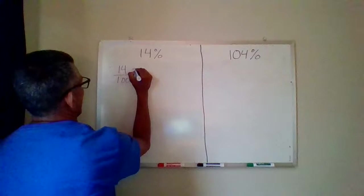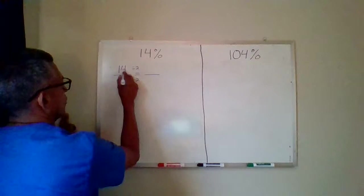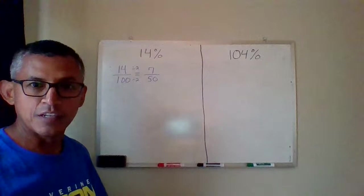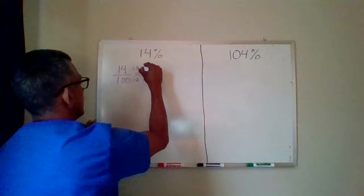I know that both of these can be divided evenly by 2, so I'm going to start there. 14 divided by 2 is 7. 100 divided by 2 is 50. There are no values that will divide evenly into 7 and 50, so this fraction is already in its simplest form. So 14% as a fraction is 7 fiftieths.